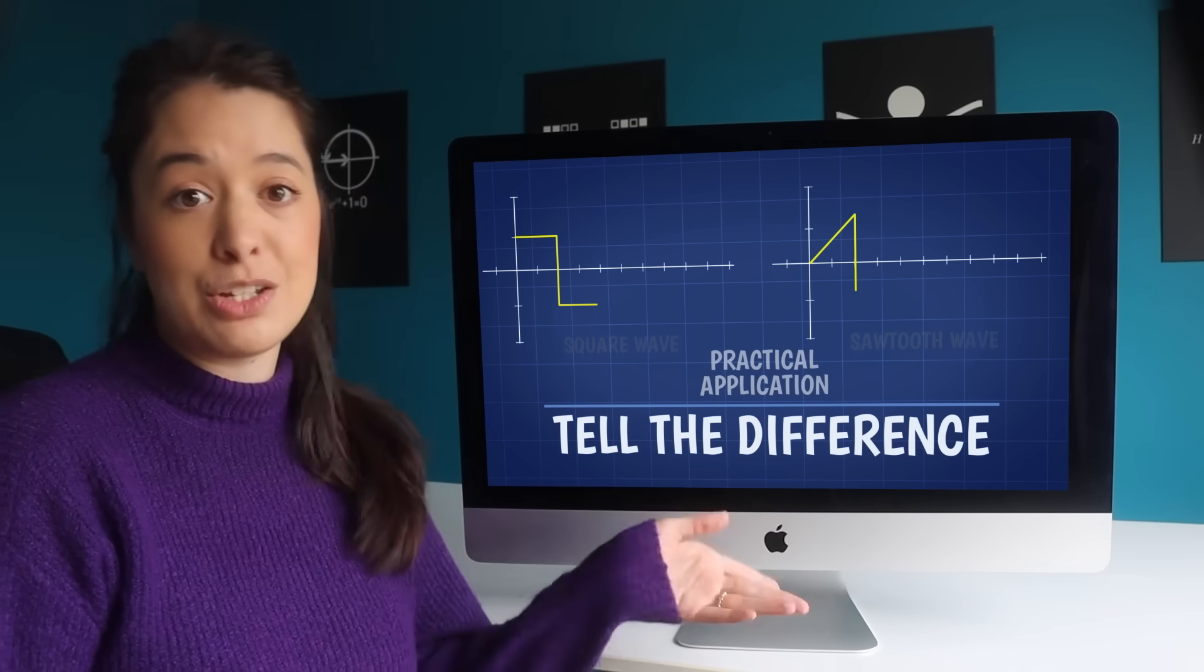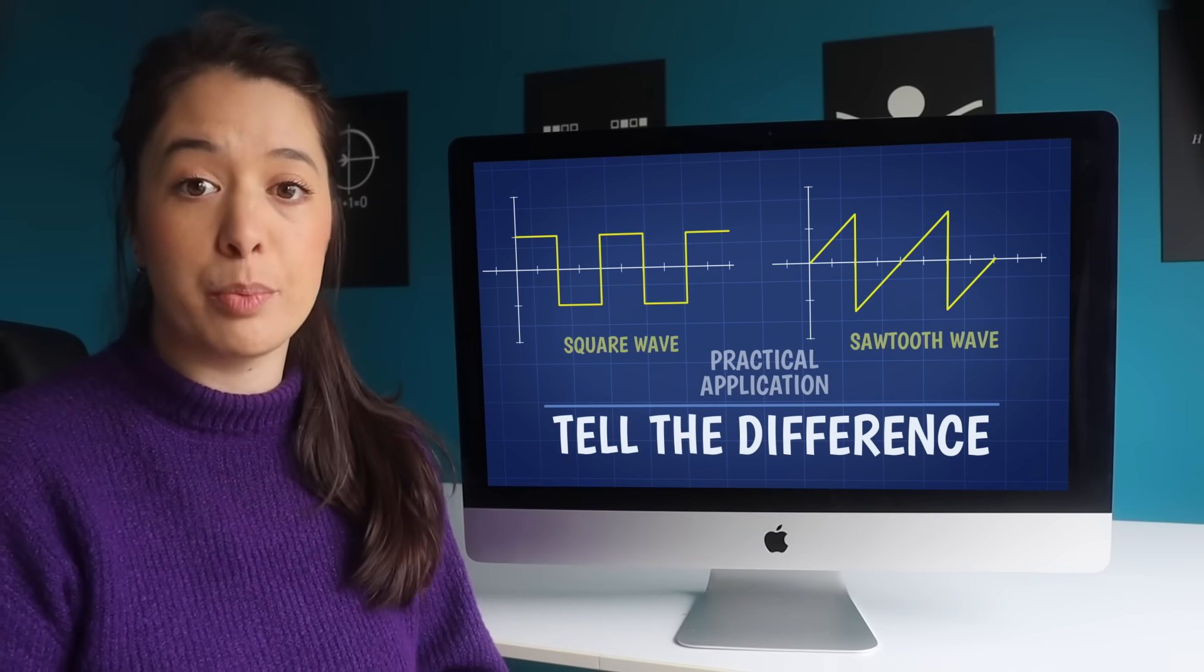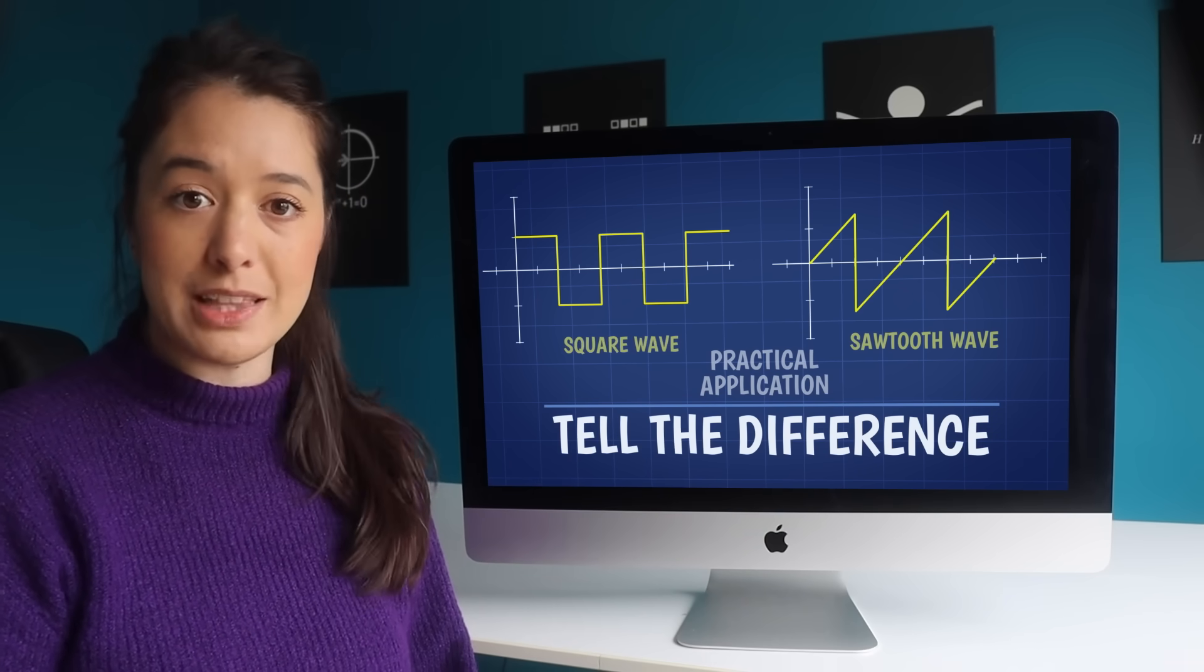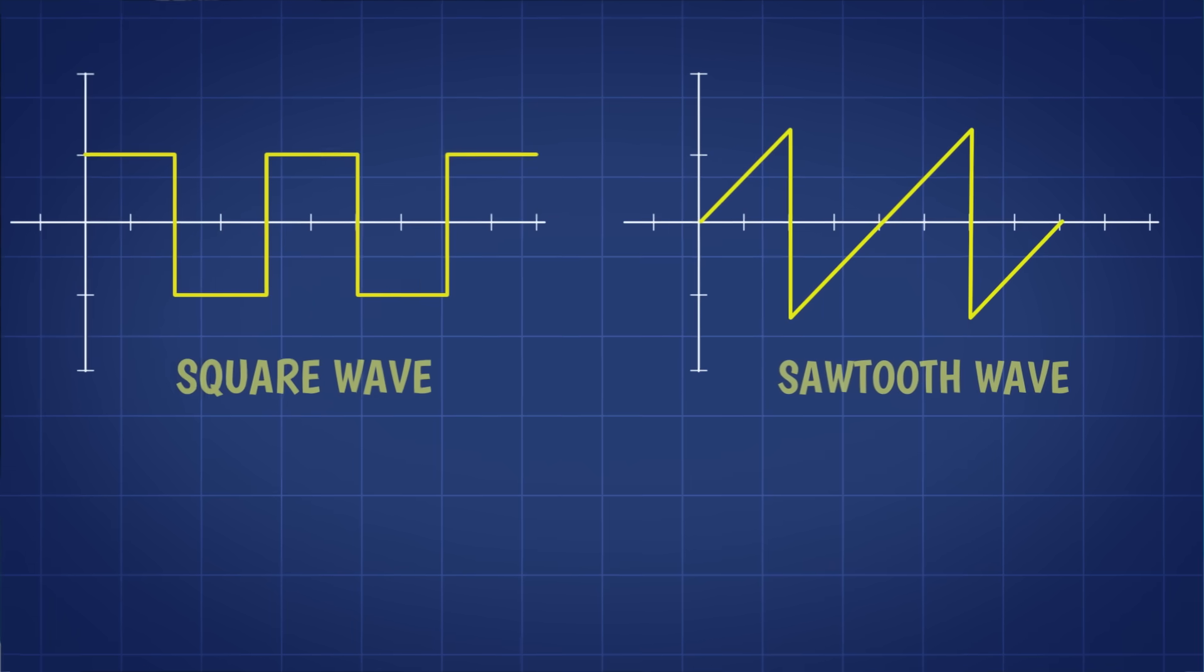Like if we had these two functions, and we wanted to write a program that could tell the difference between them. The first few terms of the square wave Fourier series are sine x plus zero sine 2x plus one-third sine 3x.